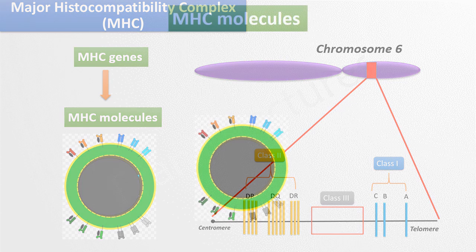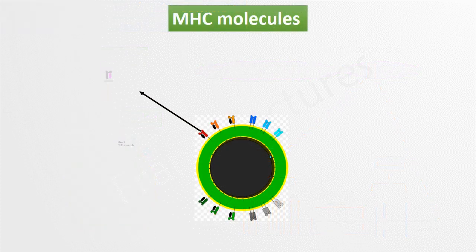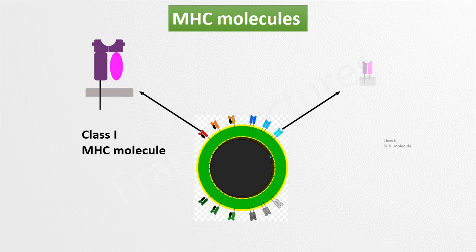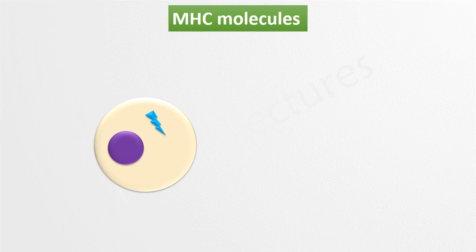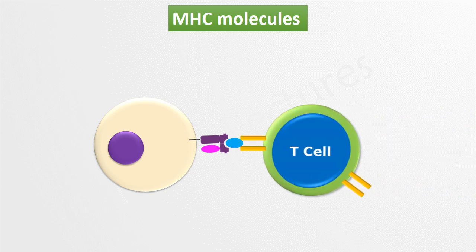The molecules which are expressed on the cell surface belong to class 1 and class 2. The main function of class 1 and class 2 MHC molecules is to bind peptides within the cells and transport them to the plasma membrane. Once peptides are on the plasma membrane, T cells recognize them and respond.